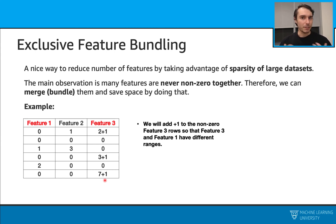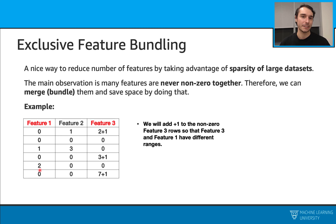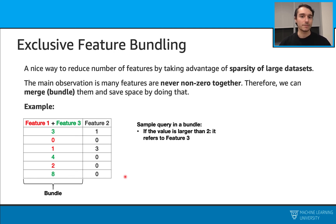There is also one thing to be careful about in this process, because we don't want them to be in the same range. For example, in the bundle of features one and three, we have the value two appearing as a common value. So we need to add plus one here to make sure that they are in different ranges. And with that, we can bundle these features. As you see, we have features one and three as a standalone feature or column. I put color coding here to show these features. We can also make a sample query in this bundle — if the value is larger than two, in this case it refers to feature three.